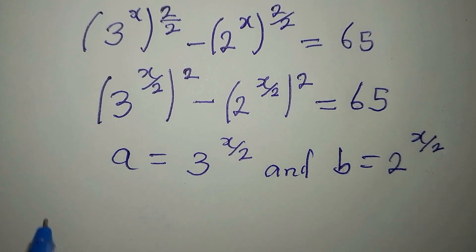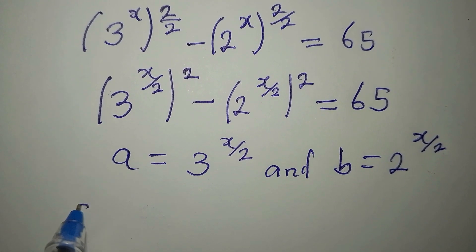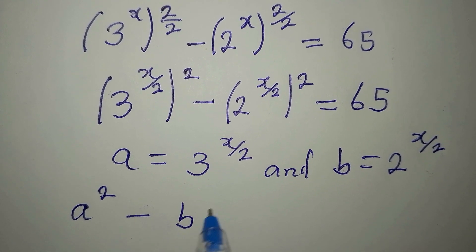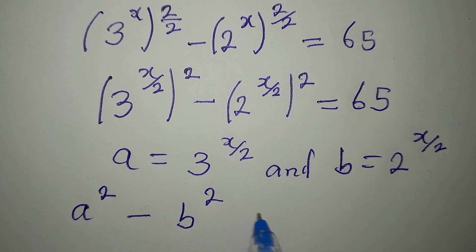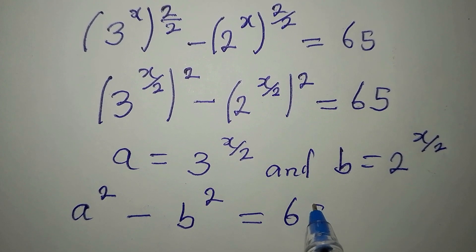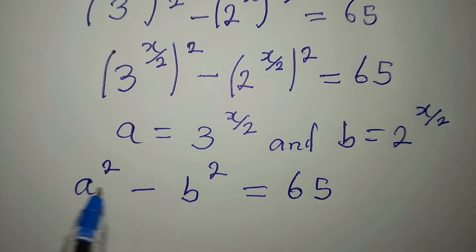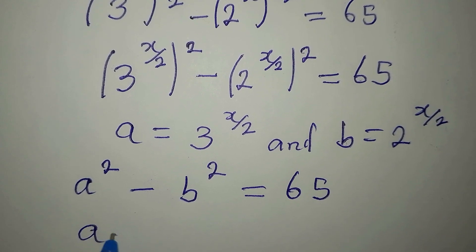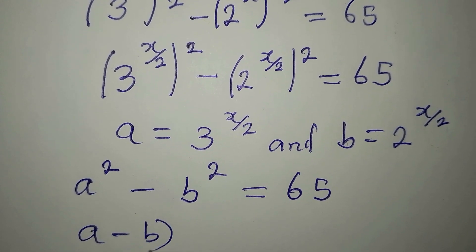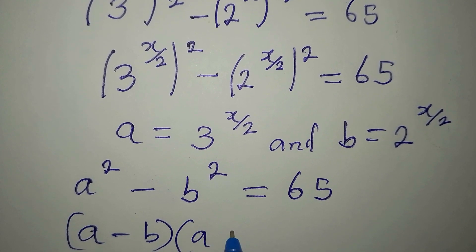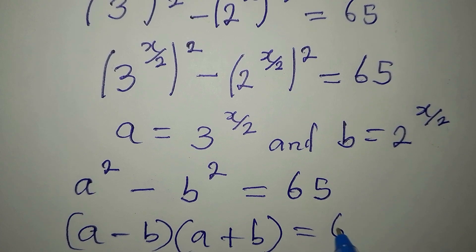This means we have a to the power of 2 minus b to the power of 2 equals 65. Expressing this as difference of two squares, we have a minus b times a plus b equals 65.